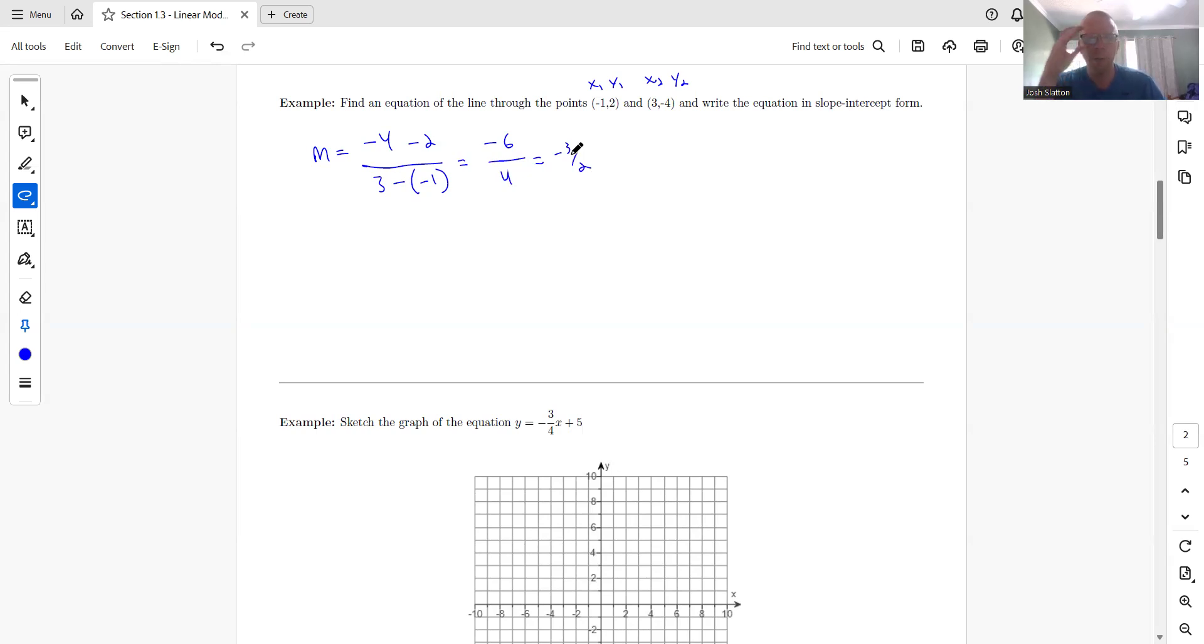And then there are a couple ways you could do this. If it's going to ask for point-slope form, you could certainly pick one of these points. So it doesn't matter which one. And subtract off the y-coordinate equals the slope. And then subtract the x-coordinate, which in this case is going to be adding one. And so there is point-slope form.